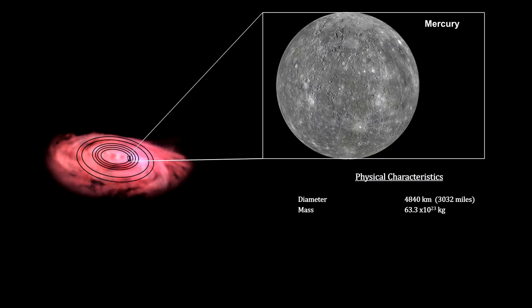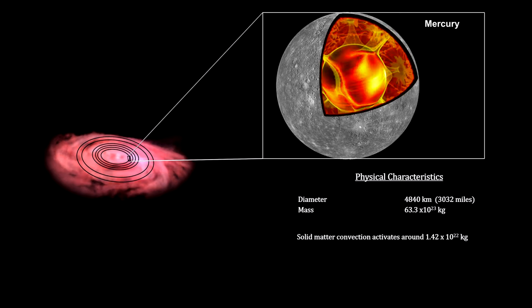And once the mass reaches around 14 billion trillion kilograms, solid mass convection activates. The temperatures and pressures inside the object liquefy matter and the core becomes molten. Mercury, our smallest planet, is a good example of this.